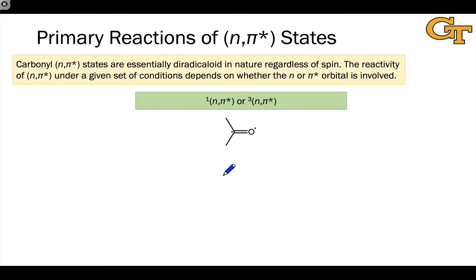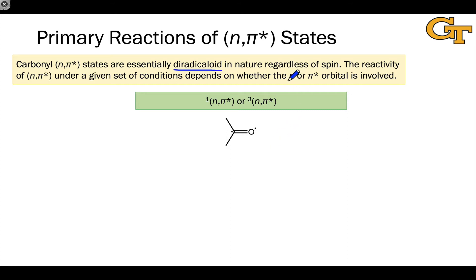The carbonyl n-pi* state has this diradicaloid nature regardless of spin, because of the spatial separation and the perpendicular nature of the n-electron and the pi* electron. The behavior of this excited state very much depends on what it's in the presence of and whether the electrophilic n-orbital or the nucleophilic pi* orbital is involved in the reactivity.